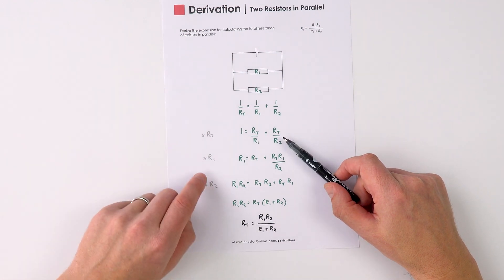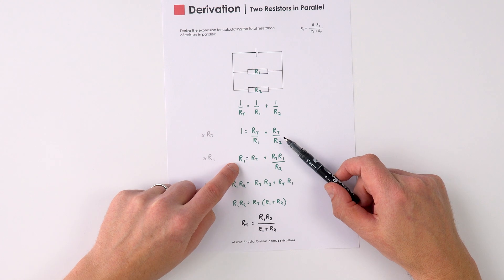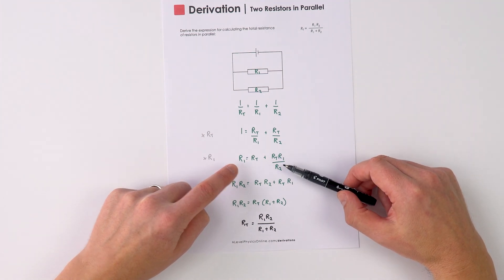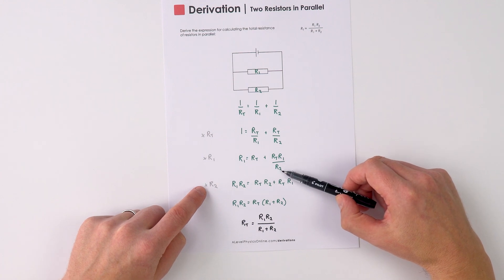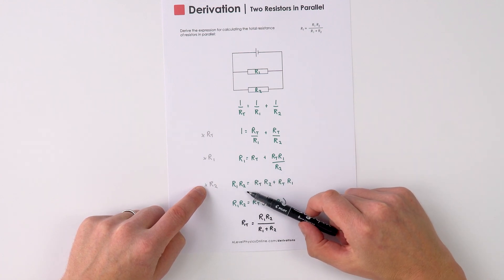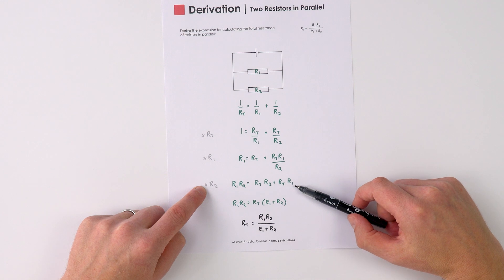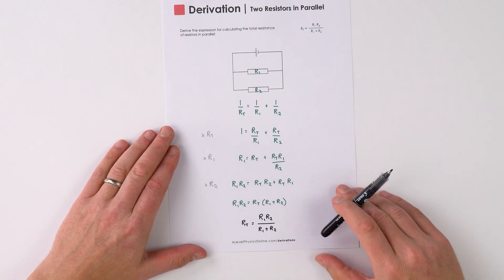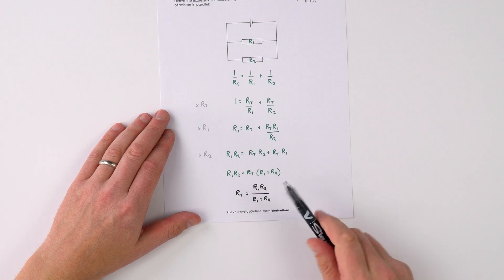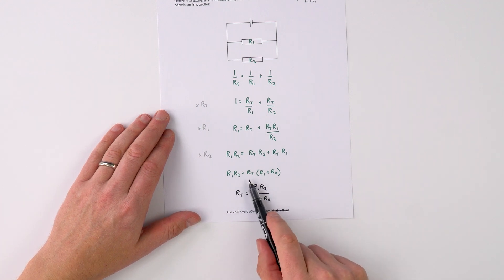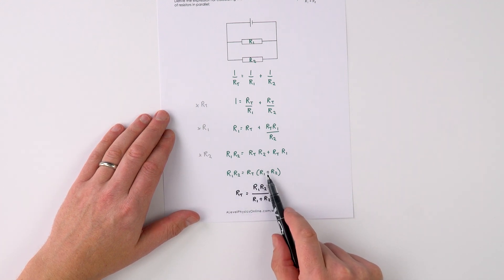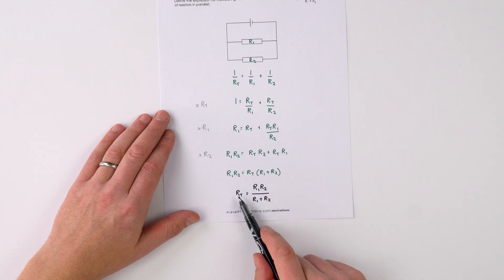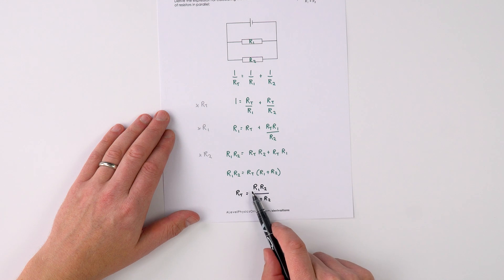We then multiply through by R1 to get R1 equals RT plus RT over R2, and then multiply through by R2 to get R1·R2 equals RT·R2 plus RT·R1. Putting RT outside the brackets, we can say R1·R2 is equal to RT multiplied by R1 plus R2.